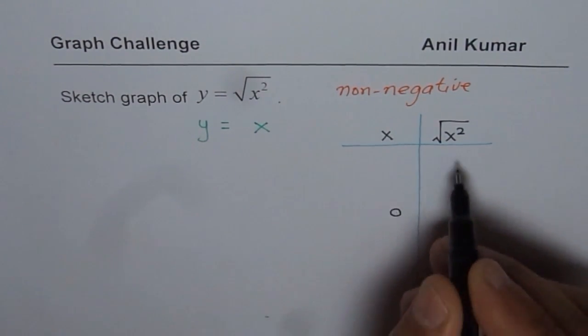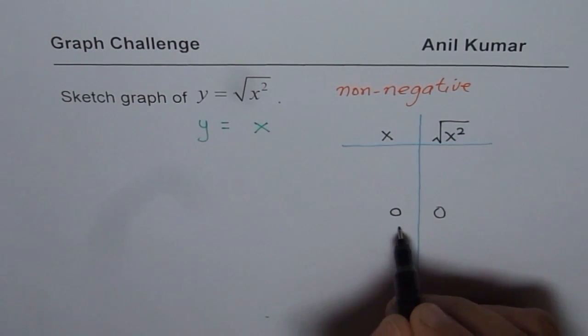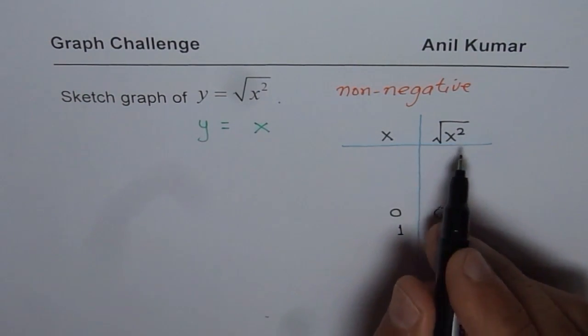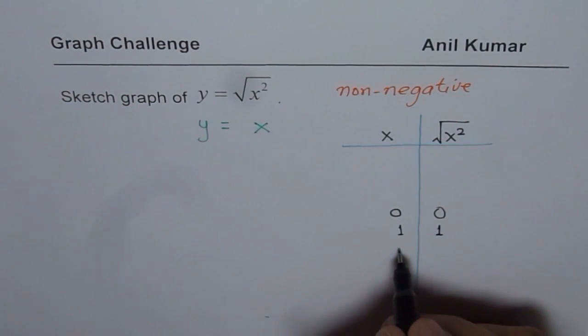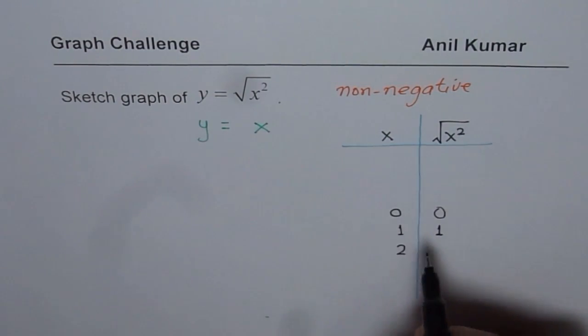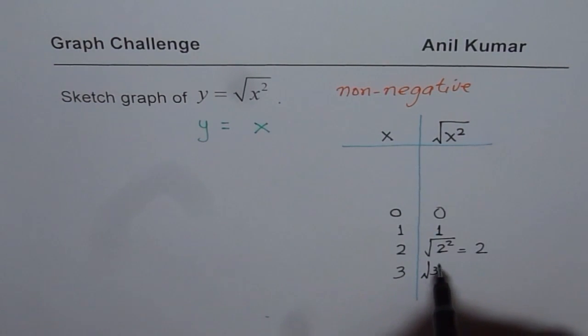Let us say 0, 0 squared square root is 0. If I take 1, 1 squared is 1 and square root of 1 is 1 and let us take 2, 2 squared is 4, right? So if I do 2 squared square root, what do I get? 2 squared is 4, square root of 4 is 2. So I do get 2. And for 3 also, we know 3 square root of 9 is 3.